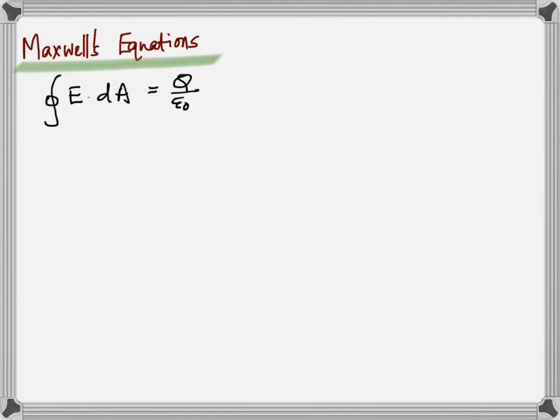How would Gauss's law in magnetism look? One big difference between electricity and magnetism is that in magnetism there are no monopoles. Magnetic field lines start from a north pole and return to a south pole — they don't end. So whatever flux passes out of a closed surface comes back in, meaning the net flux is zero. Therefore the closed integral of B dot dA equals zero.